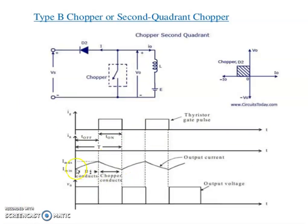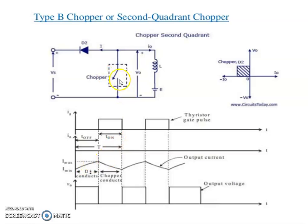This is the current waveform and output voltage waveform of a Type B or second quadrant chopper. The voltage is always positive and the current is negative. When the chopper switch CH is on, current starts to increase from minimum to maximum value. When the switch is open, current flows from load to source and decreases from maximum to minimum.